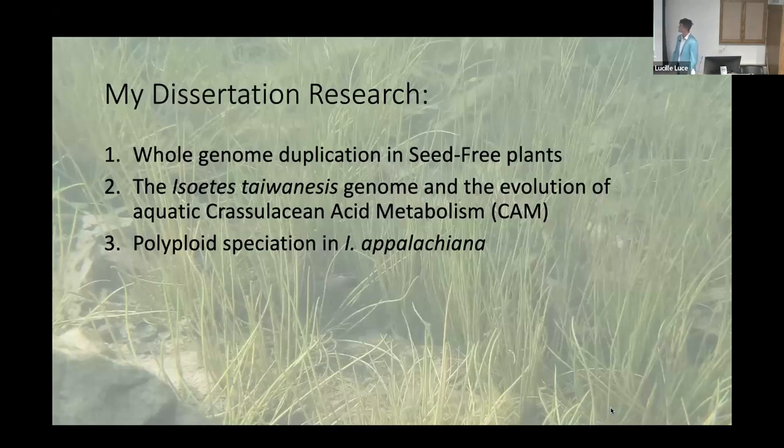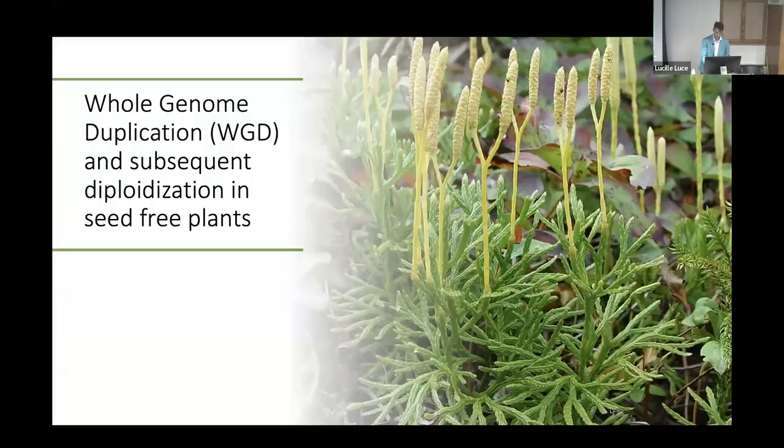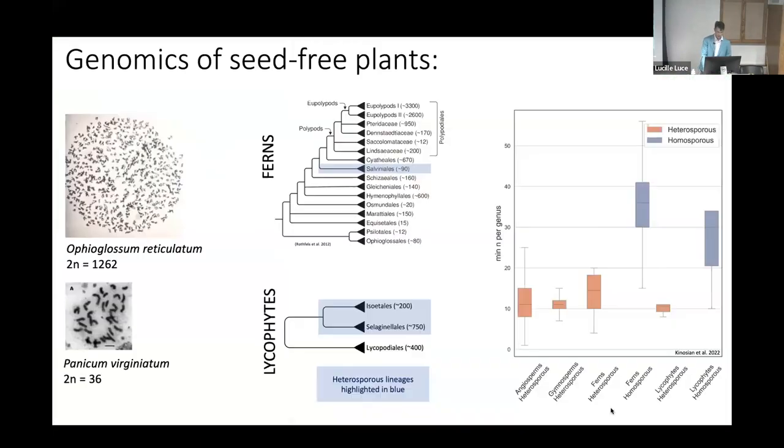So today I'm going to talk about my research in comparative genomics. I'm going to start by talking about whole genome duplication using a couple of our genome assemblies as case studies. Then I'm going to talk about Isoetes tywinensis and change gears to talk about CAM photosynthesis and convergent evolution. I'll finish up talking about recurrent formation of allopolyploid in Isoetes appalachiana complex.